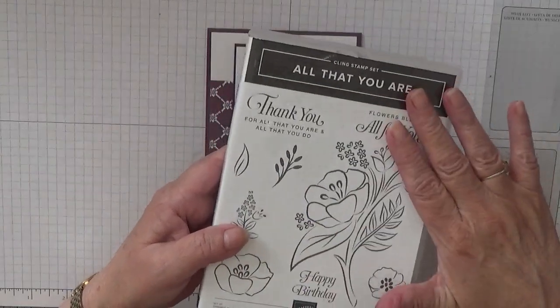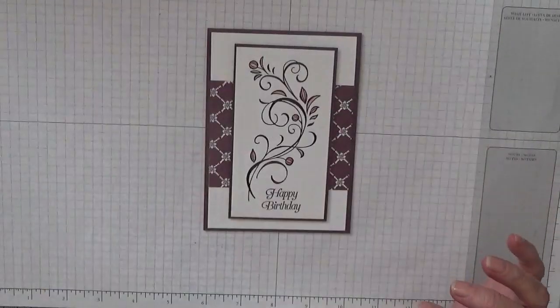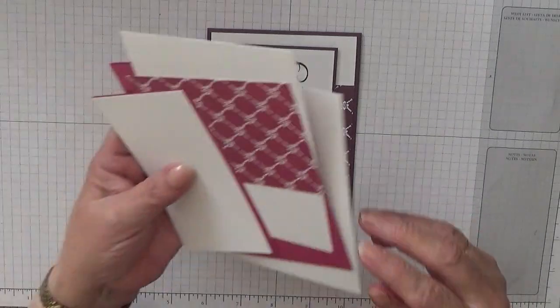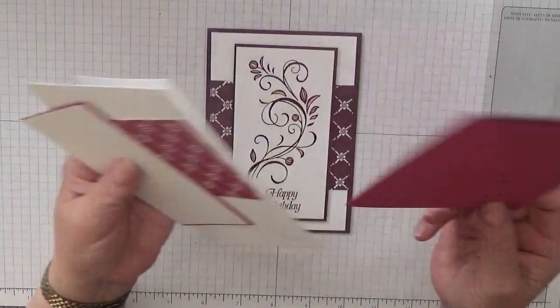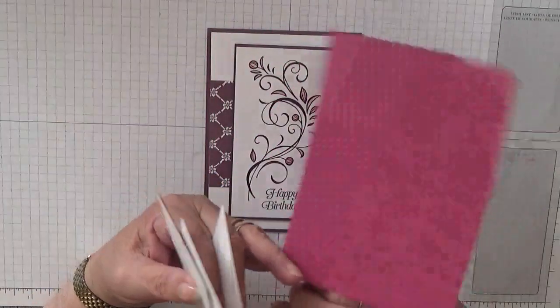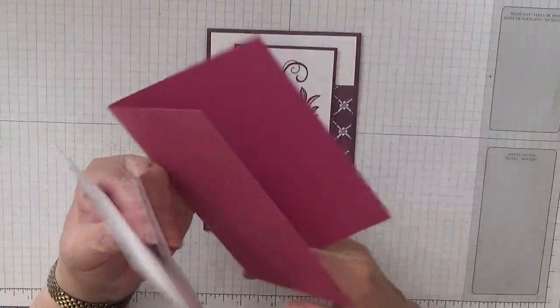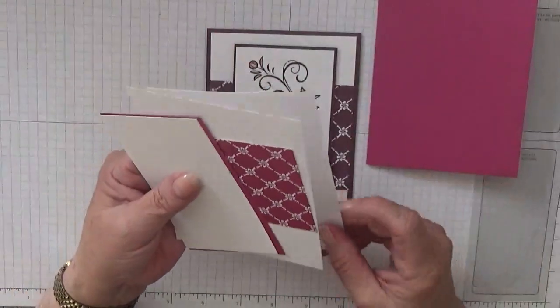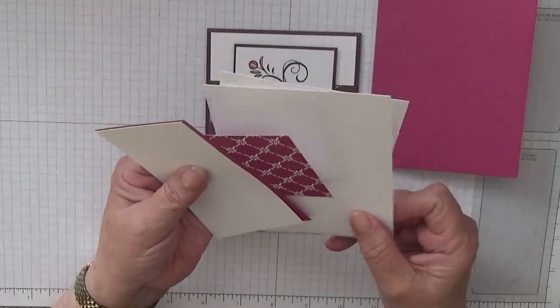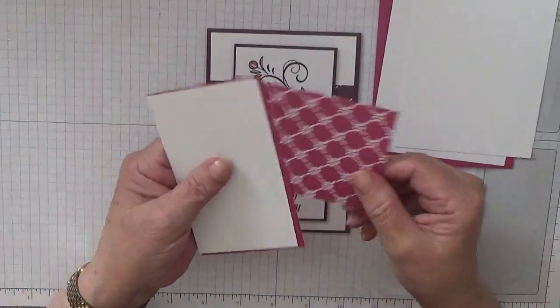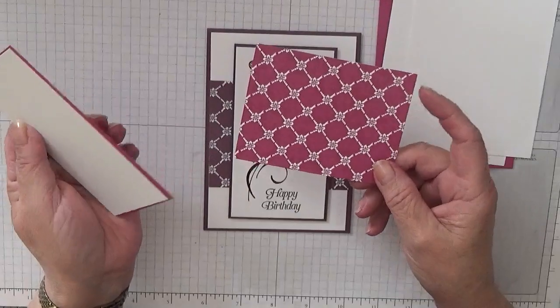The cardstock I've used, changing the color, I've got Berry Burst at 8 and a quarter by 5 and seven-eighths, scored at 4 and one-eighth and fold it in half. Two pieces of white cardstock at 5 and five-eighths by 3 and seven-eighths.